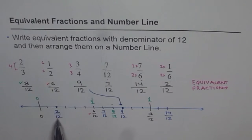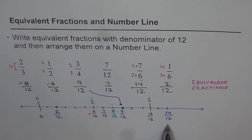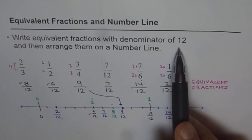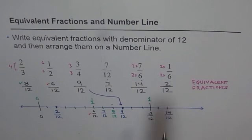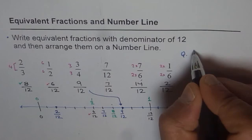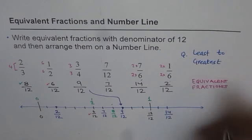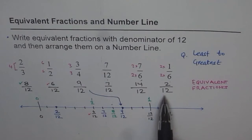Now that you have arranged them on the number line, you know the least is 2/12, which corresponds to 1/6. And the greatest number in your list is 14/12, which is 7/6. You have learned in this video how to write numbers with the same denominator — that was the least common multiple for all the numbers in the denominator. The exercise for you is to write these numbers from least to greatest.